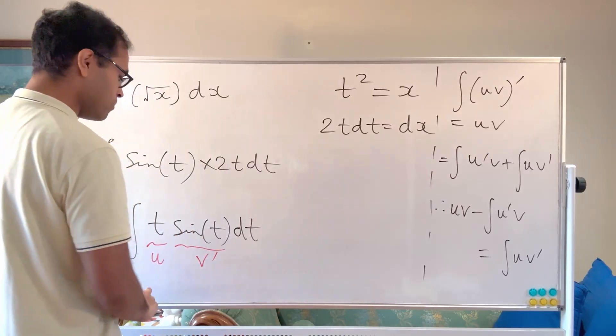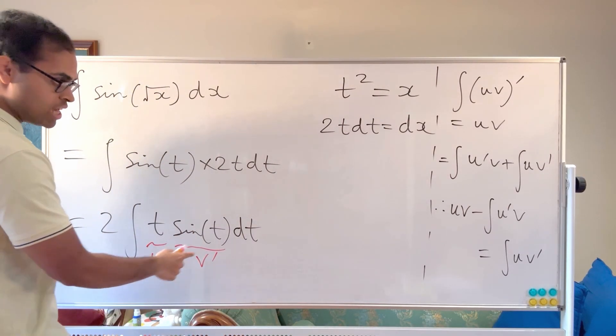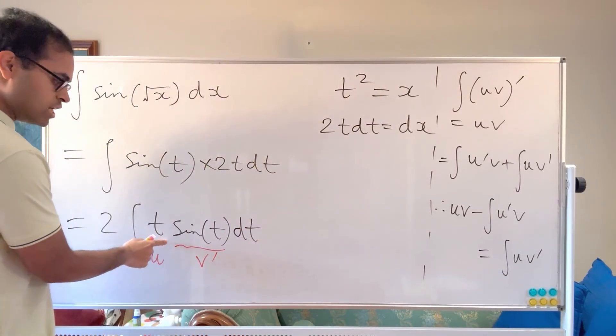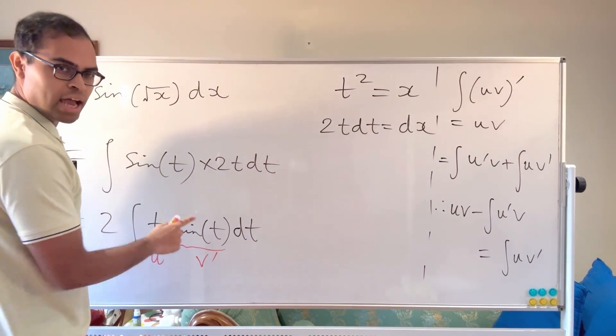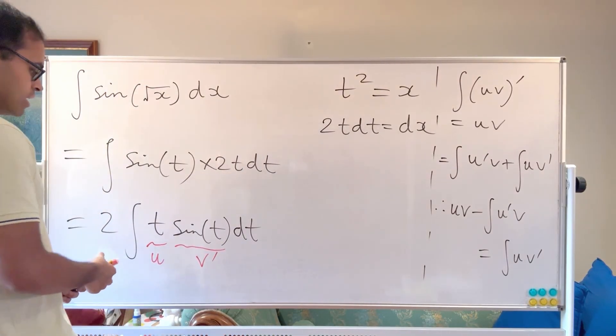So we've got u and v prime. So now what you do is you see that this integral u v prime, basically, when you take u prime v, you're going to differentiate the t and integrate the sine t, and that's just going to be cosine or negative cosine t. So how that's going to work is, let's just write it out.